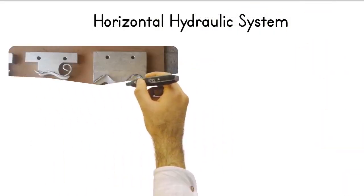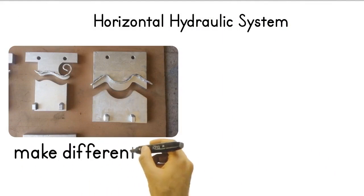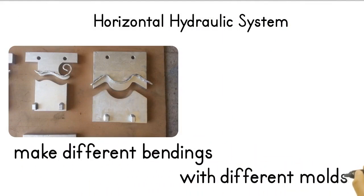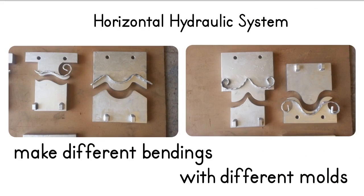With this machine, which is actually a horizontal hydraulic press, it is possible to make different bendings with different molds you put in front of it.